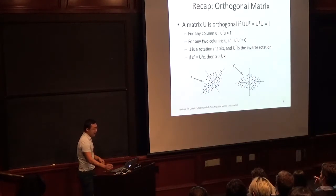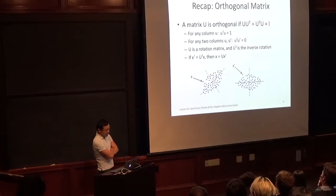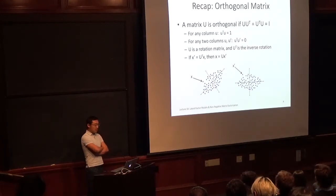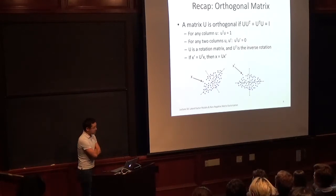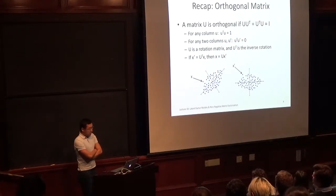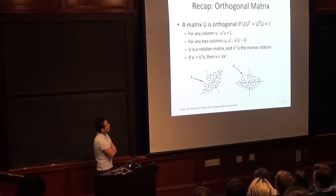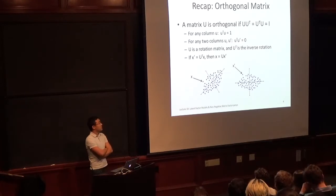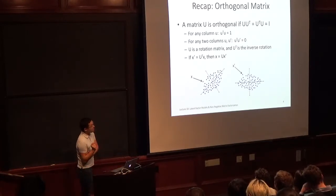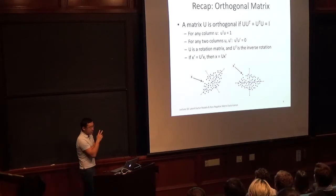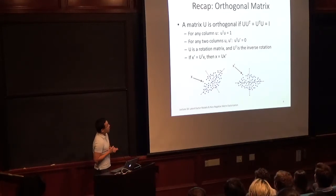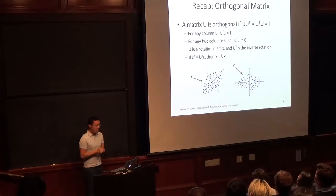To recap, we spent a lot of time in the previous lecture talking about orthogonal matrices. A matrix U is orthogonal if U·Uᵀ and Uᵀ·U both equal the identity. This implies every column of U is a unit vector — Uᵀu equals one — and any two distinct columns u and u' are orthogonal, meaning uᵀu' equals zero.